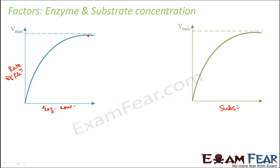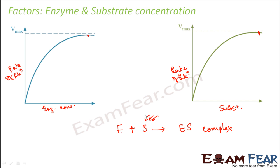Similarly, with substrate concentration — enzyme and substrate combine to form an enzyme-substrate complex. The rate of reaction will increase, but only up to a certain point. If the enzyme is fixed but substrate concentration keeps increasing, eventually the substrate will have no more enzymes to combine with and form enzyme-substrate complex. The reaction rate will not be further affected. So the concentration of both enzymes and substrate should be comparable, because the formation of the enzyme-substrate complex is the first step for enzyme activity to take place.